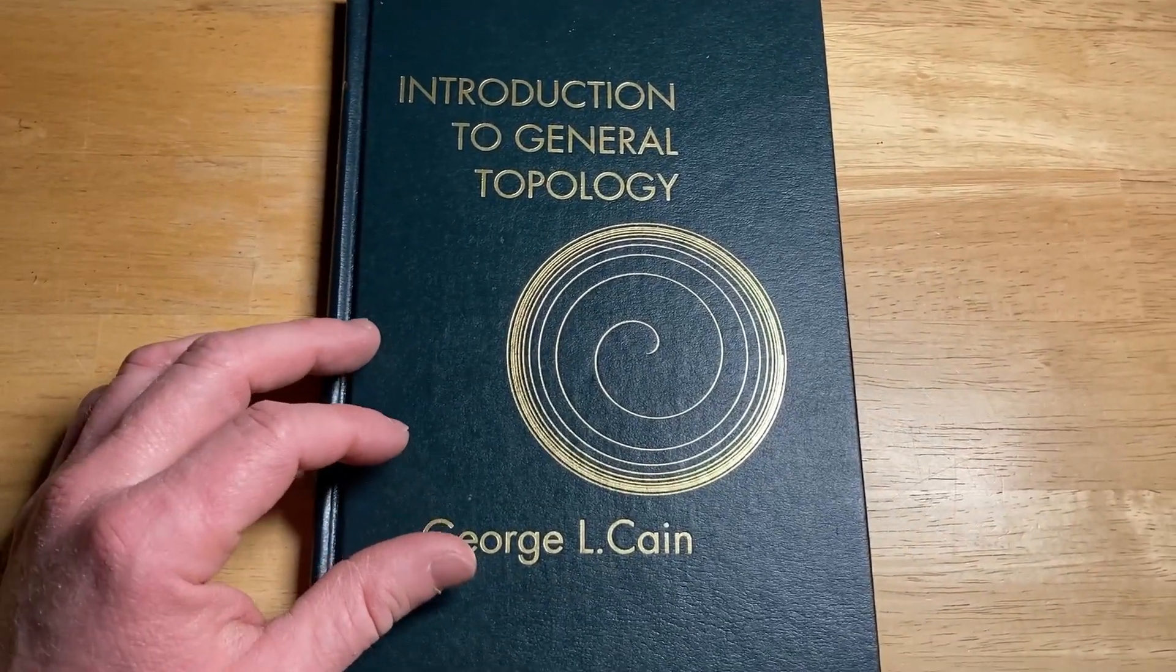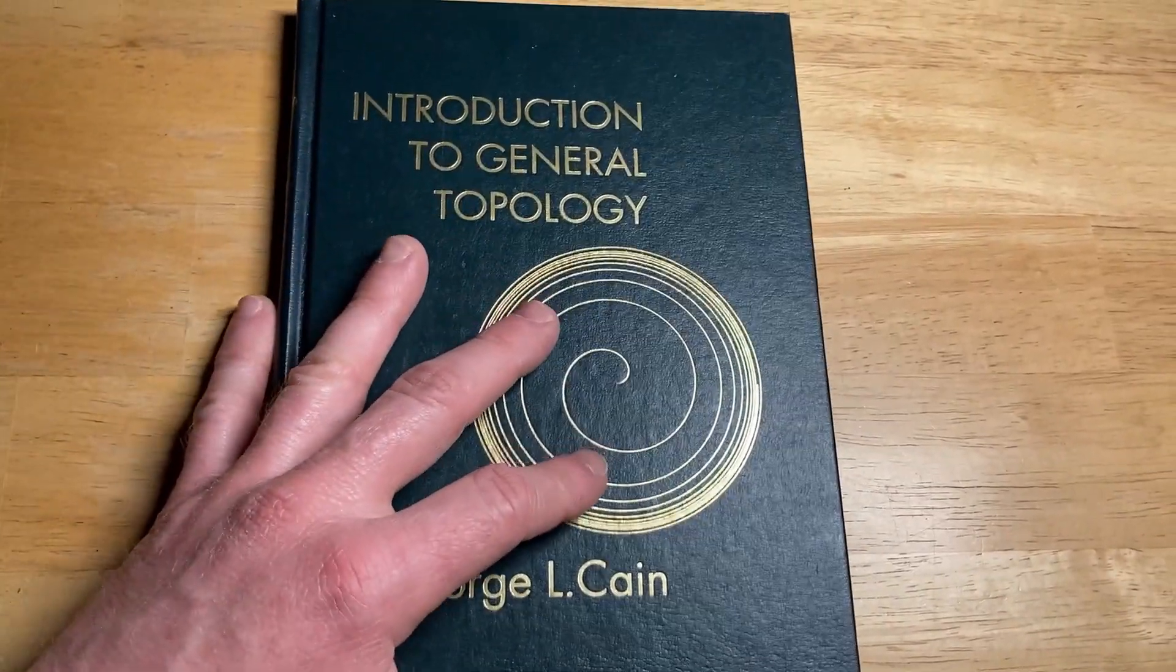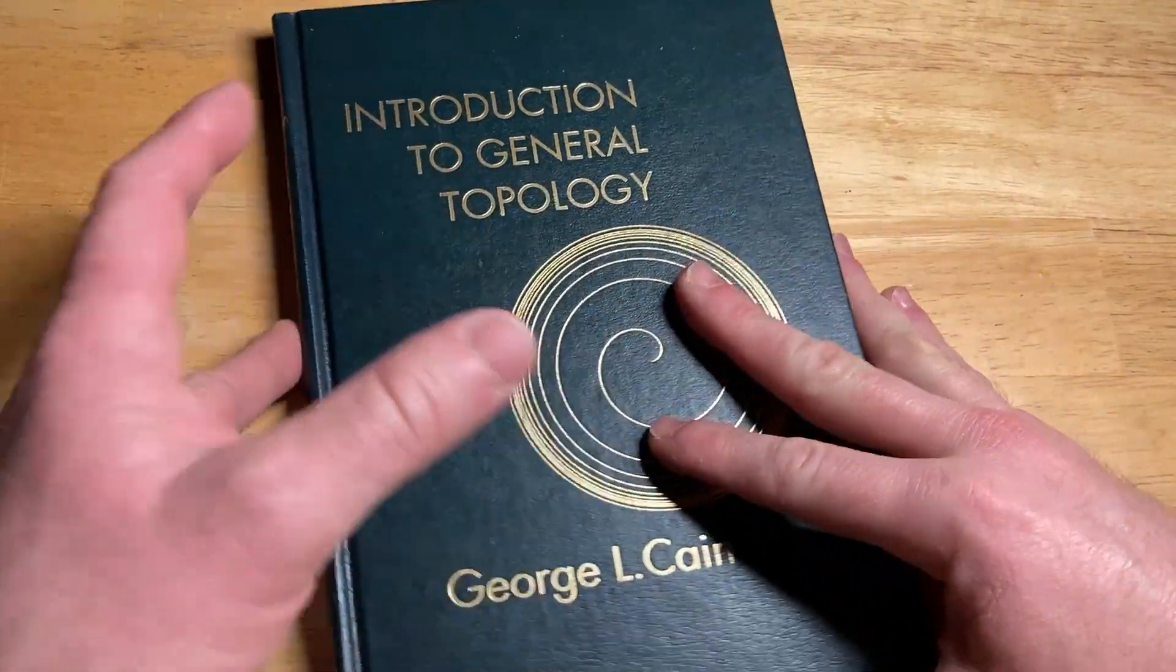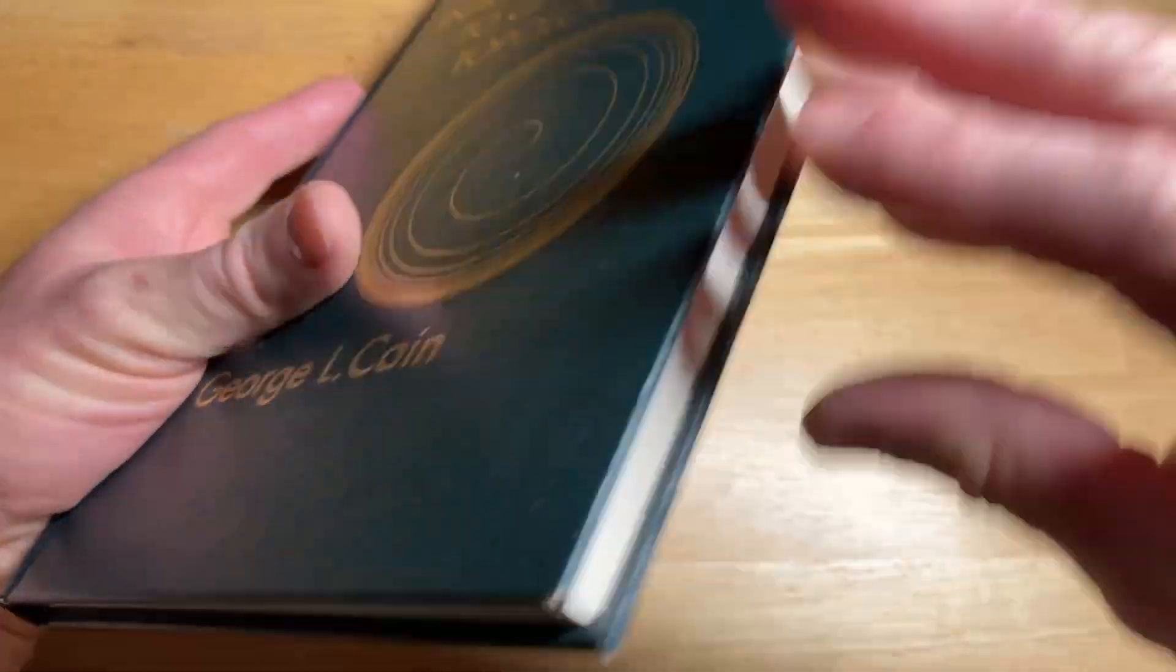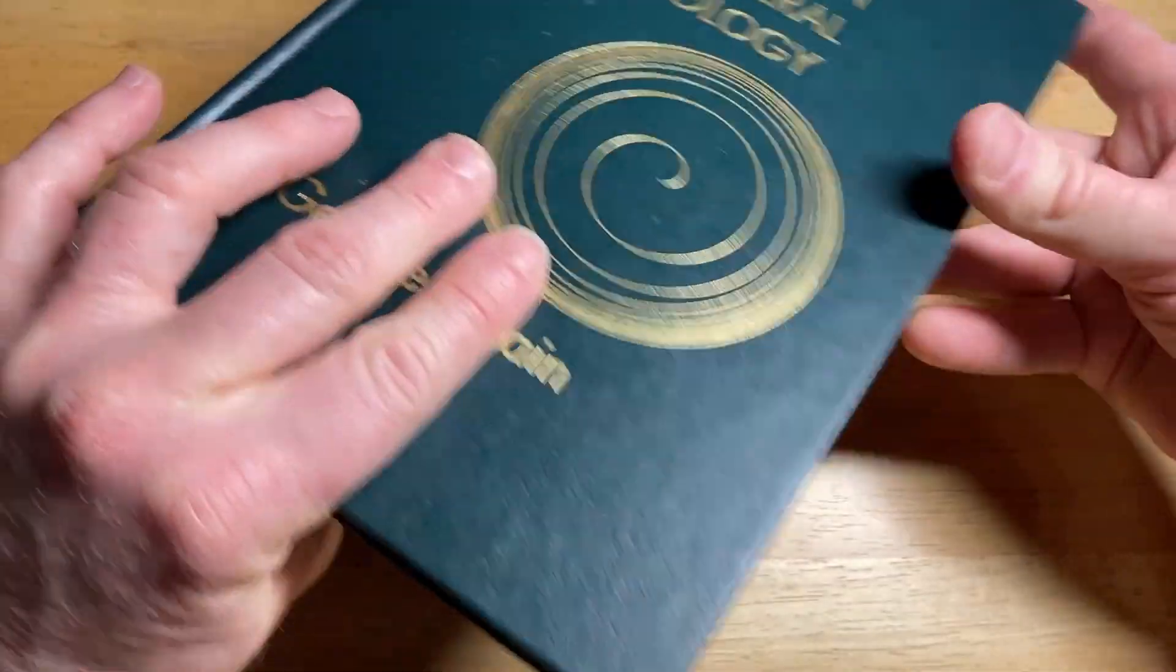We're also going to talk about what this book contains, and we're going to take a look at the mathematics in this book. This is a beautiful book. It's very clean. It has a very nice, clean layout. It's very thin, but it's filled with tons of mathematics. I can't wait to show you what's in this book.